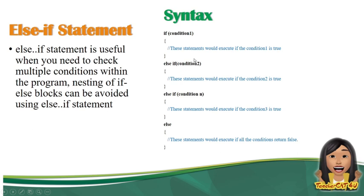Condition 2. Pag nag-true ito, gagawin niya itong statement dito. Ito yung block of code nya — malalaman ninyo dahil sa bracket. Pag nag-false ito, bababa ulit sa susunod na condition. Pwede kayong maglagay ng kahit ilang condition pa. If nag-true ito, gagawin niya itong statement dito, yung block of code dito. Pero pag nag-false ito, or pag lahat ng given condition ay nag-false, automatic nababagsak lahat yan sa else, gagawin na niya ito.